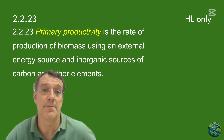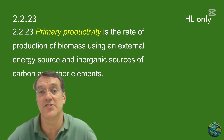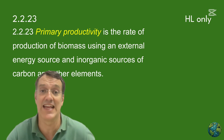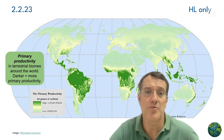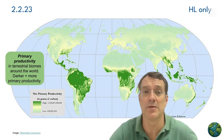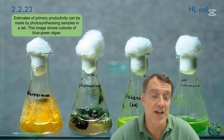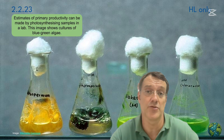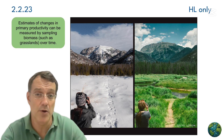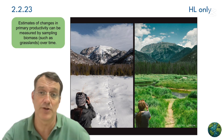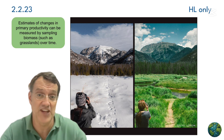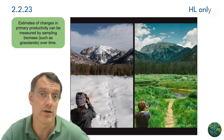Primary productivity measures the rate at which biomass is produced using external energy sources and inorganic materials. We measure productivity in units like kilos of carbon per square meter per year. Understanding primary productivity is essential for making ethical decisions about resource management, and when we measure it across different ecosystems we gain insight into their capacity to sustain life and support biodiversity.